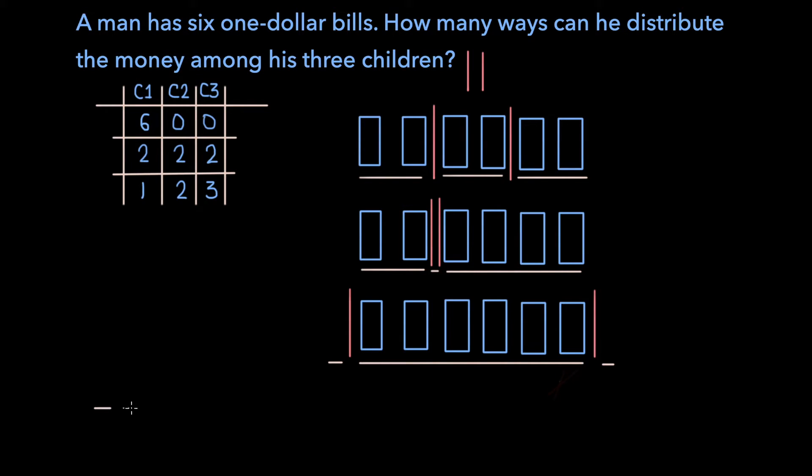And so to find how many ways this is, we're going to think of having eight slots. Two spots will be used for the dividers, and the other six spots will ultimately be occupied by the $6 bills. So let's say, for example, we place one divider here, and one divider here, and then we fill in the rest of the spots with the dollar bills.